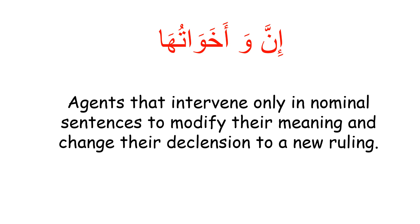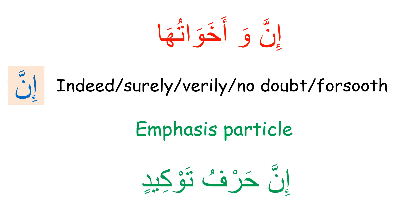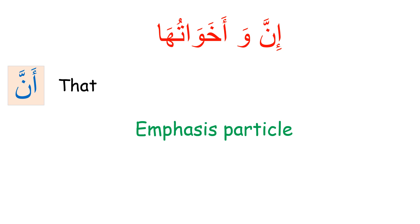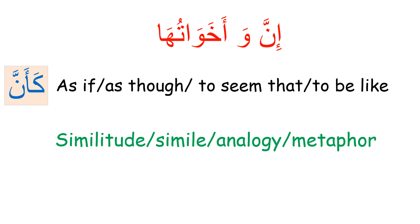Starting with the meanings: inna means 'indeed,' 'verily,' or 'forsooth,' not in a sarcastic way — it is an emphasis particle, called in Arabic harf tawkeed. Anna is also an emphasis particle meaning 'that' — not the demonstrative 'that,' but the one used to introduce clauses after verbs, adjectives, and nouns, such as 'I believe that he is innocent.' So anna is also harf tawkeed.